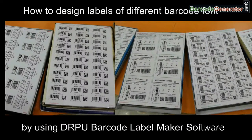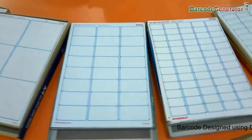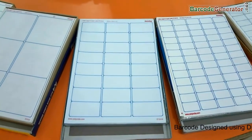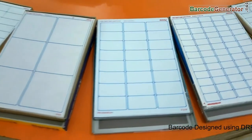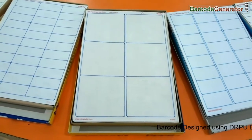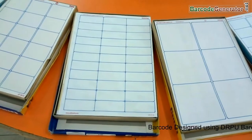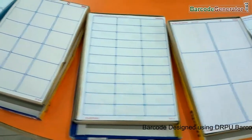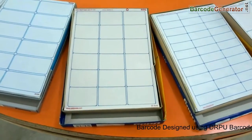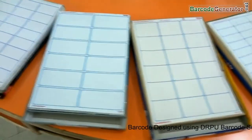How to design labels of different barcode fonts by using the RPU barcode label maker software. Different types of barcode label sheets are available in the market. We have highlighted these label sheets for visibility. Choose your label sheet as per requirement.